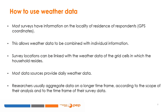In the microeconomic literature we are going to examine, researchers combine household or individual information from survey data with the weather conditions of the locality in which the household resides. This is possible because most surveys provide GPS coordinates of the locations of sample households. Since weather data is generally provided for a grid cell, researchers link each survey location with the weather data of the grid cell in which the household resides. Since most data sources provide daily weather data, researchers usually aggregate data on a longer time frame — a month, season, or year — according to the scope of their analysis.